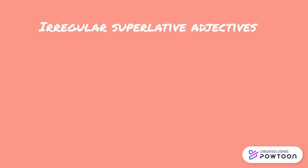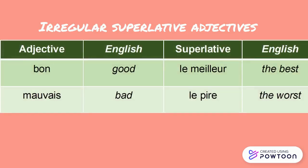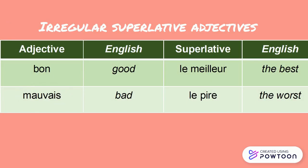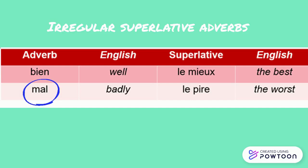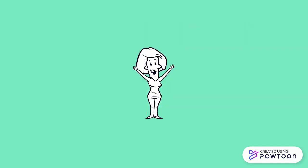We find the same irregular superlative adjectives and adverbs. 'Bon' (good) — superlative: 'le meilleur' (the best). And 'mauvais' (bad) — superlative: 'le pire' (the worst). For adverbs: 'bien' (well) — superlative: 'le mieux' (the best). And 'mal' (badly) — superlative: 'le pire' (the worst). Bon travail, au revoir!